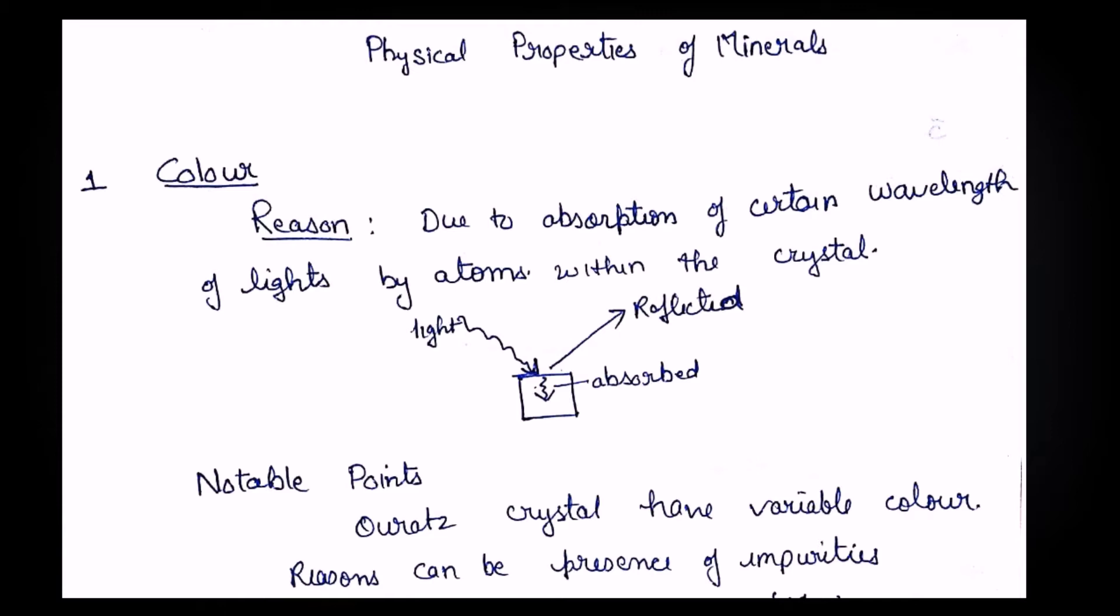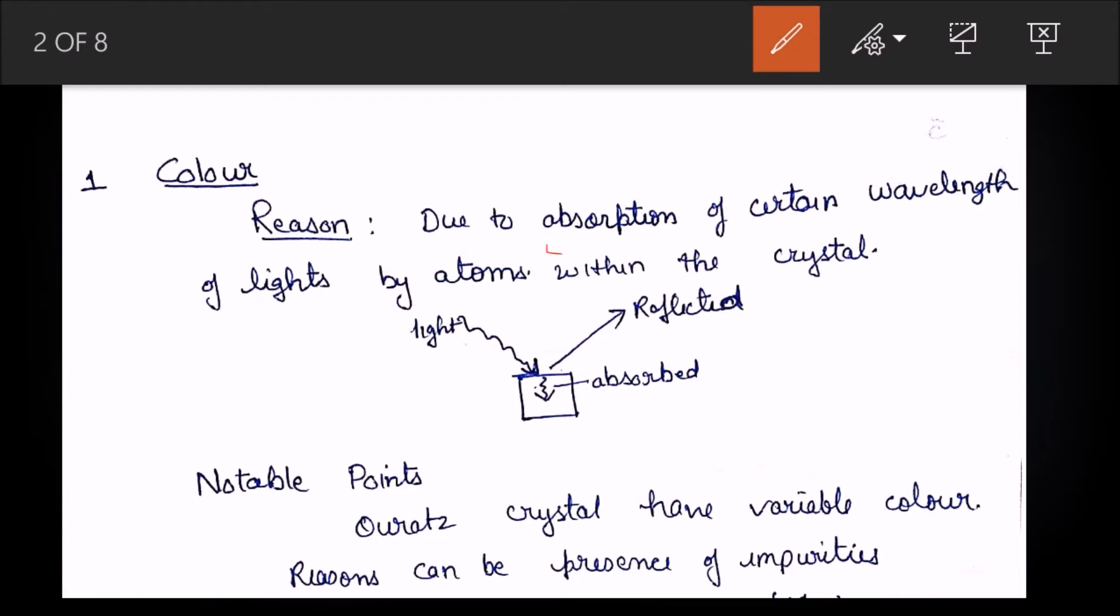The first physical property is color. Color is due to absorption of certain wavelengths of light by atoms within the crystal, and the reflected light appears as the mineral's color. However, this is not a definite property because many minerals have the same colors, and quartz crystals can have variable color because of presence of impurities. For example, amethyst quartz has a purple-like color because of impurity of manganese. So color is a property but not a distinctive property on the basis of which you can identify minerals.